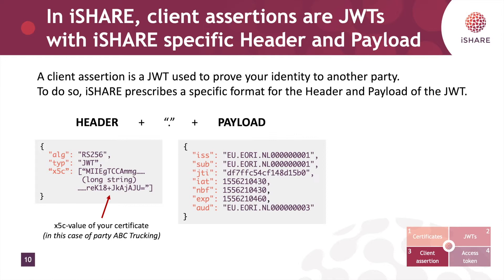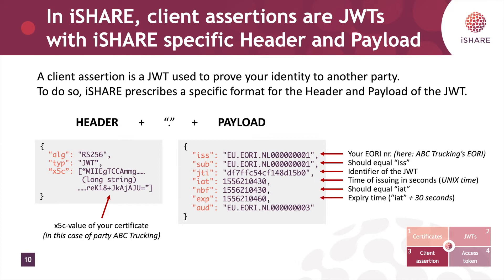The payload will be the essential part that will prove your identity to the other party, which is the receiver. The issuer value will be your EORI number — here ABC Trucking's EORI number is used — and sub should always equal issuer. JTI is an identifier of the JSON web token; it needs to be some string so that you can uniquely identify the JSON web token. You then specify the time of issuing in seconds in Unix time, and most often that should equal the not-before time. The expiry time of the JSON web token should be the issued time plus 30 seconds, so that the client assertion is valid for 30 seconds. This improves security by minimizing the chances of a leaked client assertion. Then you add the audience, which is the party's EORI number for whom the client assertion is intended — here we use Warehouse 13.